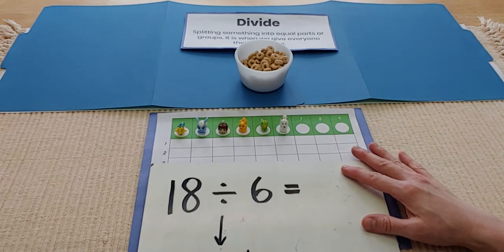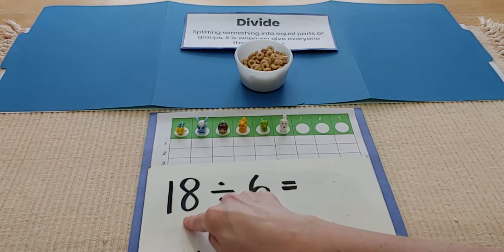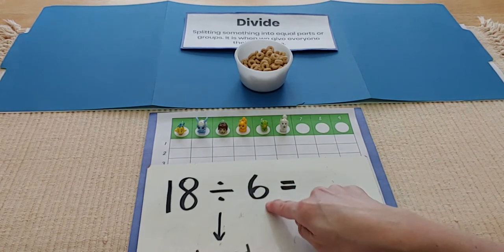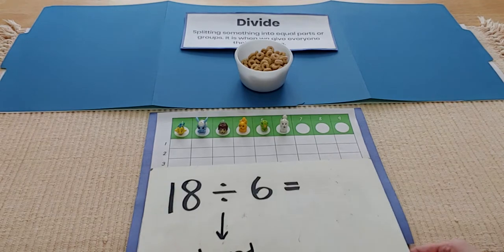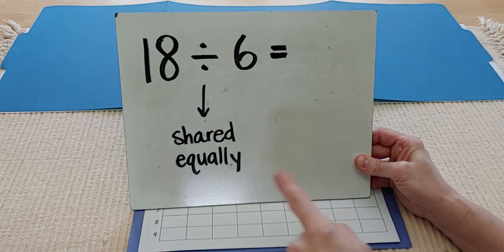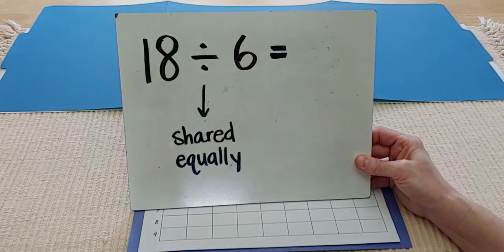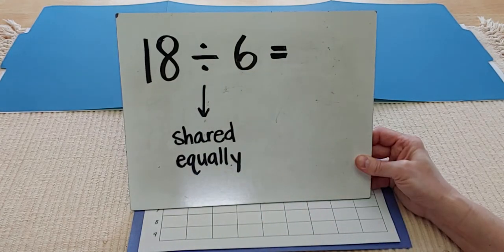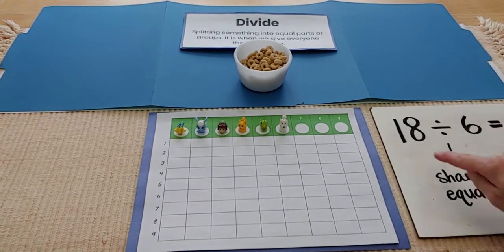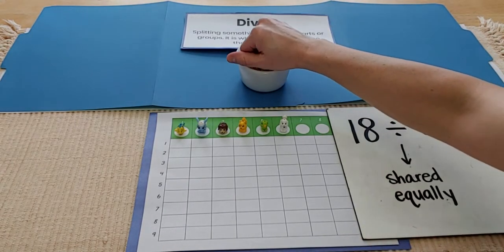This is my number sentence. It says here that I have 18 Cheerios. And I have to divide it, which means I have to share it equally with my six pet friends. So let's remember that. When you see that division sign, it means you need to share this number in the front, this 18, equally among my six friends. So let's see if I can do that.